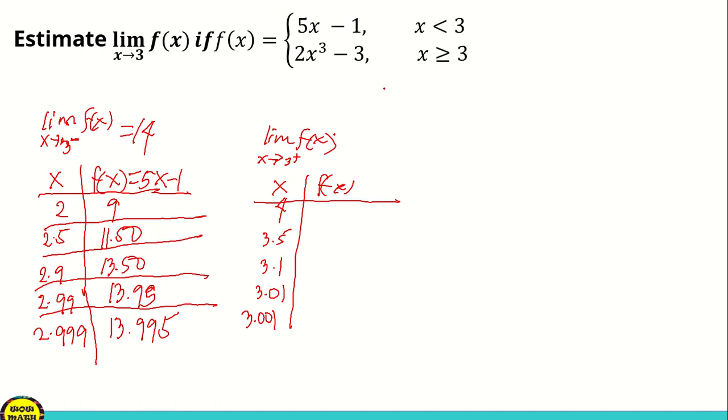Since my condition tie class, the values of x here is greater than 3 - 4, 3.5, 3.01, that is greater than 3. So therefore, we're going to use 2x cubed minus 3. Ito yung gagamitin natin since yung values of x natin is greater than 3.